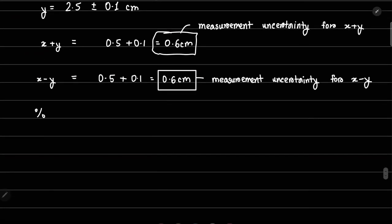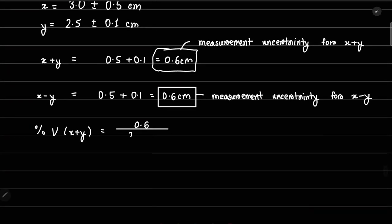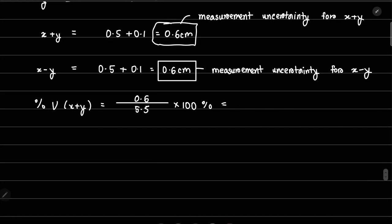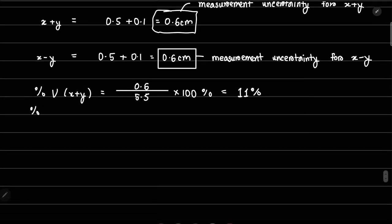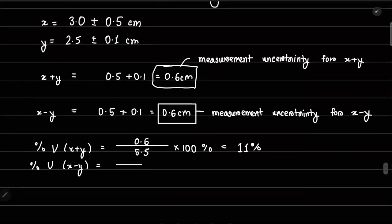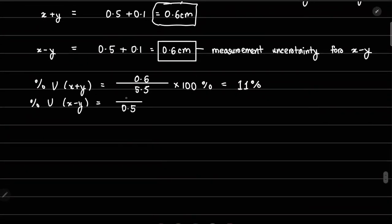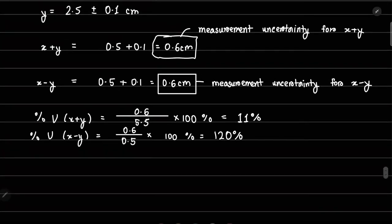To find the percentage uncertainty of x + y: take the measurement uncertainty 0.6, divide by the value (3 + 2.5 = 5.5), and multiply by 100%, giving 11%. For x − y, the denominator becomes 3 − 2.5 = 0.5, with the same numerator 0.6, giving a percentage uncertainty of 120%. Extreme cases like this should not appear on your exams — this is just an example.